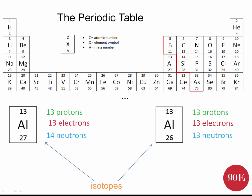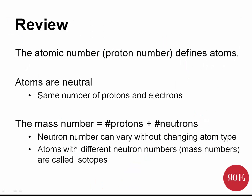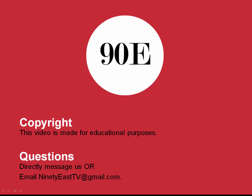More on isotopes later on, but for now remember: the atomic number, or proton number, defines an atom. Atoms are neutral, so they have the same number of protons and electrons. The mass number of an atom is the number of protons plus the number of neutrons. The neutron number can vary from one atom to another of an element without changing the atom type. And atoms that have different numbers of neutrons — or different mass numbers — but the same atomic number are called isotopes. I hope you found this video useful. If you have any questions, send us a message through YouTube or email us at 90EastTV@gmail.com. Thanks very much.